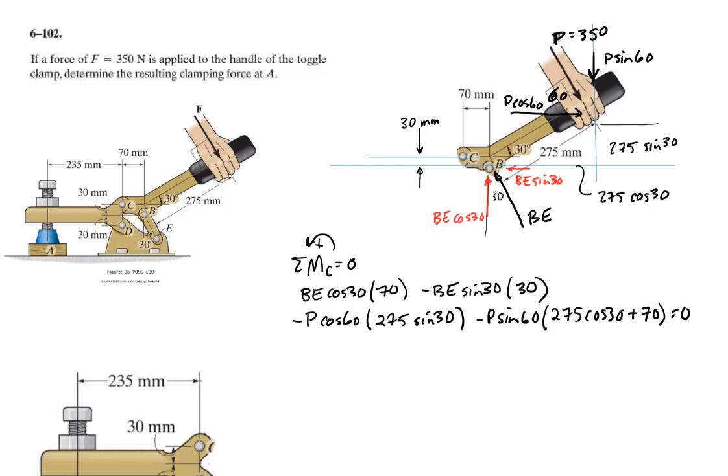I'll let you walk through this and make sure you understand all those lever arms. But if P is equal to 350 newtons, I can solve for BE with this one equation. So I just found BE is equal to 2573 newtons, and that is a key part of the answer.